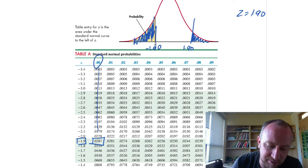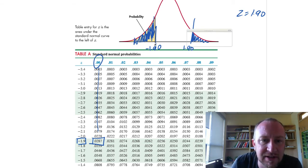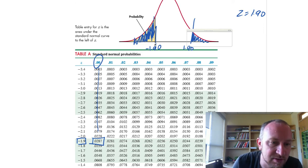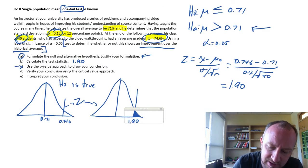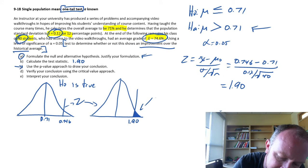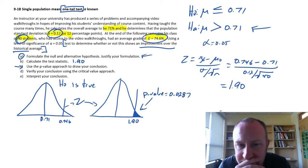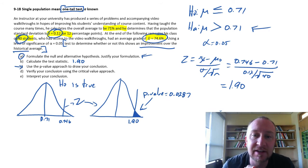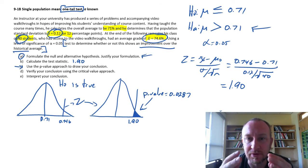So now we have our p-value, 0.0287. This tells us, this is really the measure of evidence that we have, the magnitude of the evidence against, in this case, the null hypothesis. I say that because it's very small.